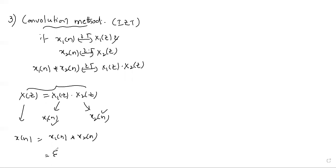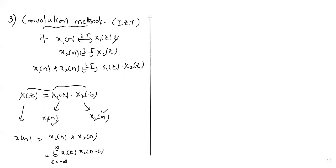We just need to substitute in the convolution formula: the sum from k equal to minus infinity to infinity of X1 of k multiplied by X2 of n minus k. That's it. So like this, we are going to use the convolution method to find the inverse Z-transform. Let us see with one example how to use this.